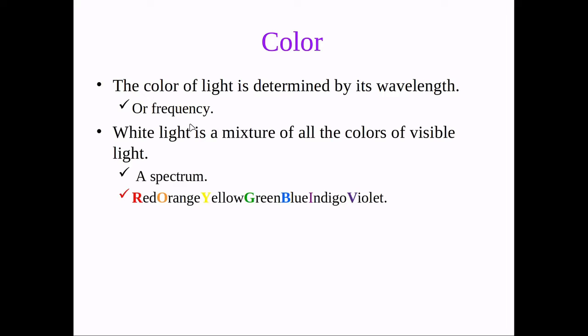White light is a mixture of all of the colors and that is what we would call a spectrum. There's this little saying here that helps us to remember what the order is: ROYGBIV - red, orange, yellow, green, blue, indigo, and violet.